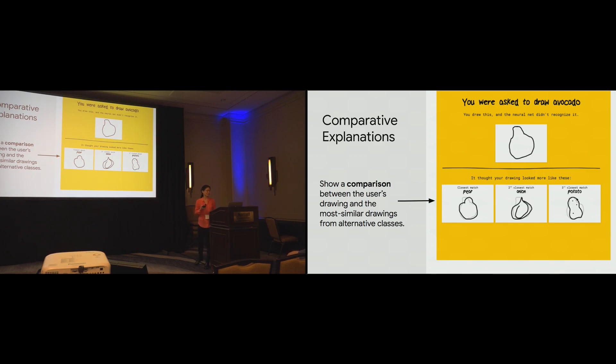So, comparative explanations aim to compare your drawing to other objects that are not in your object class. So, here, for instance, your avocado might look like a pear, an onion, or a potato. And so, what we did was we computed the embedding of the user's drawing, and then we found the nearest neighbor drawing from alternative classes. So, for example, the pear, as you can see, is sort of overlaid on top of the user's drawing of an avocado so that they can kind of see for themselves how similar their avocado might look to a pear.